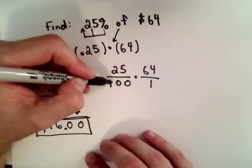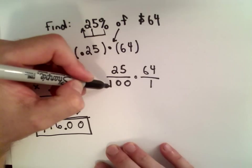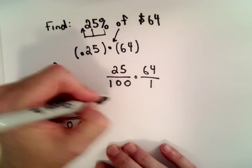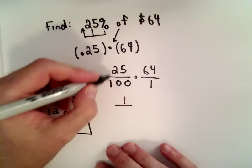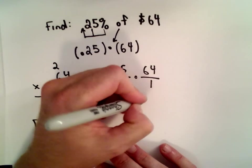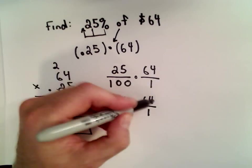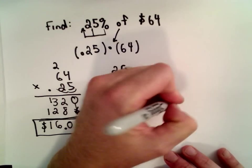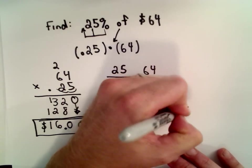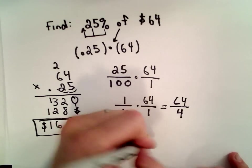Now, we could reduce here. If you think about reducing 25 and 100, well, 25 will go into both 25 and 100. 25 will go into 25 once. 25 will go into 100 four times. So we're still just multiplying. Now, we would just multiply across the top, across the bottom. That's 64 divided by 4. You could even do long division.